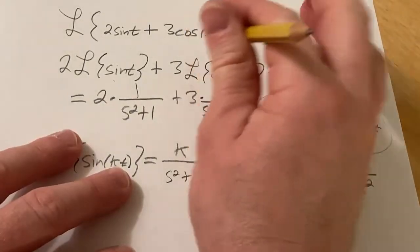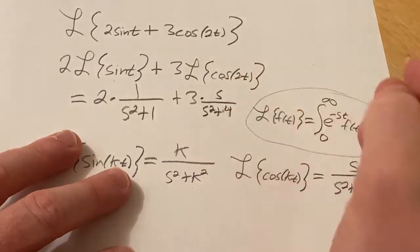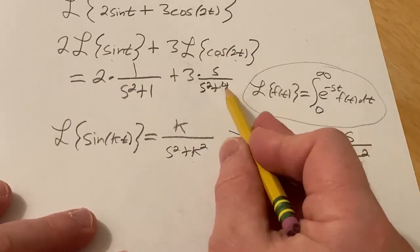A little mistake there, 4. Cosine 2t, so k squared is going to be 4.